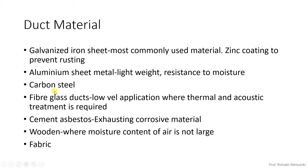Then cement asbestos duct, where the exhausting material is corrosive — in that case we can use cement asbestos duct. Then wooden ducts are also there. Depending on industrial application and process requirements, we can also have stainless steel duct. Then we can have PVC duct.